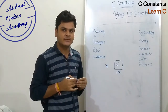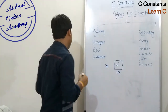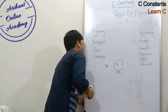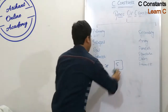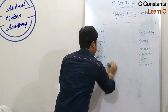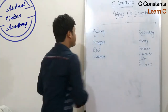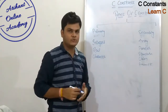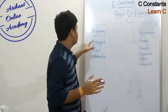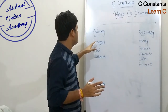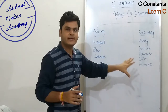Now, if we discuss further, we will discuss about its types — primary and secondary constants. There are two types of C constants: primary constants and secondary constants.